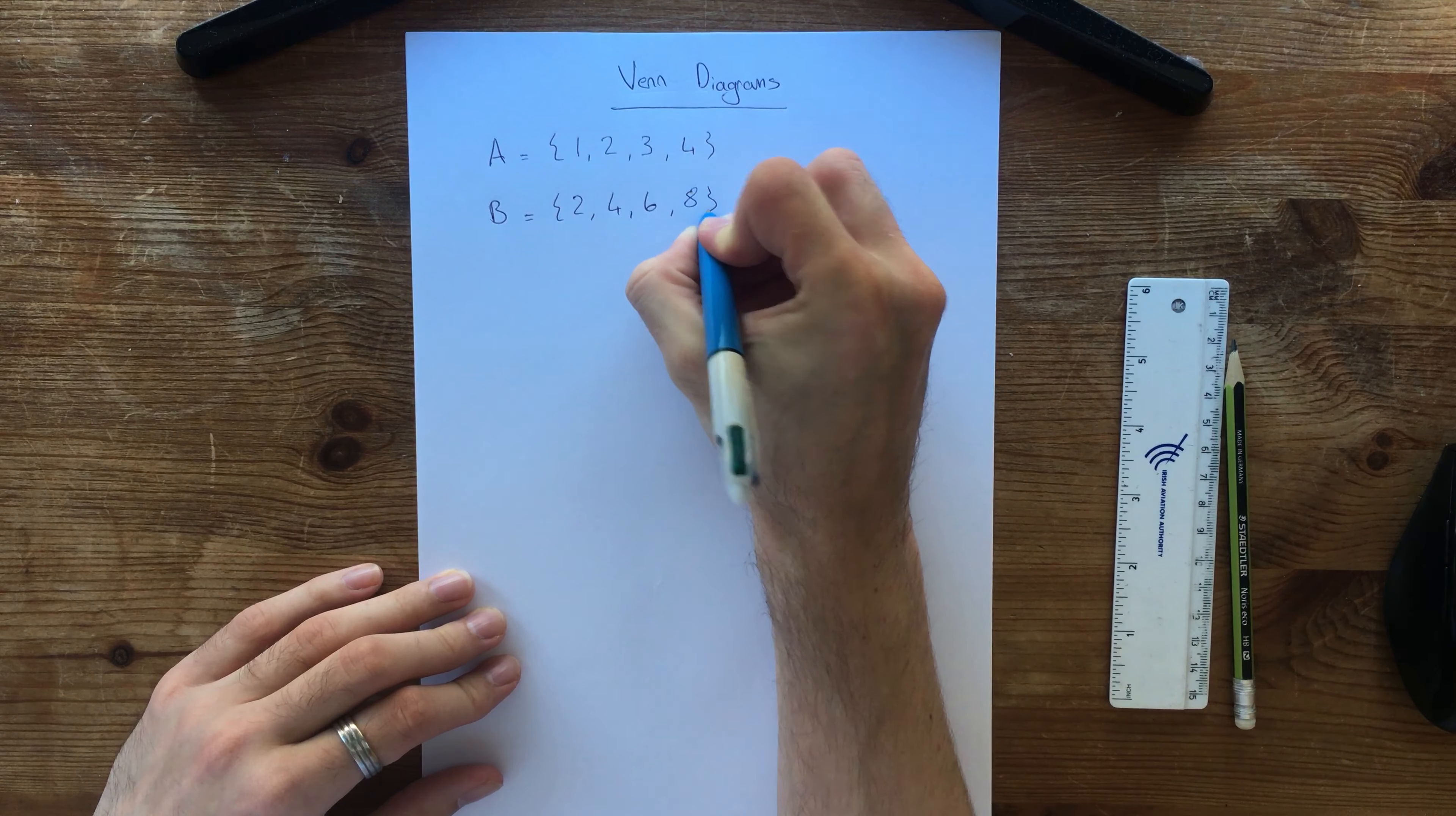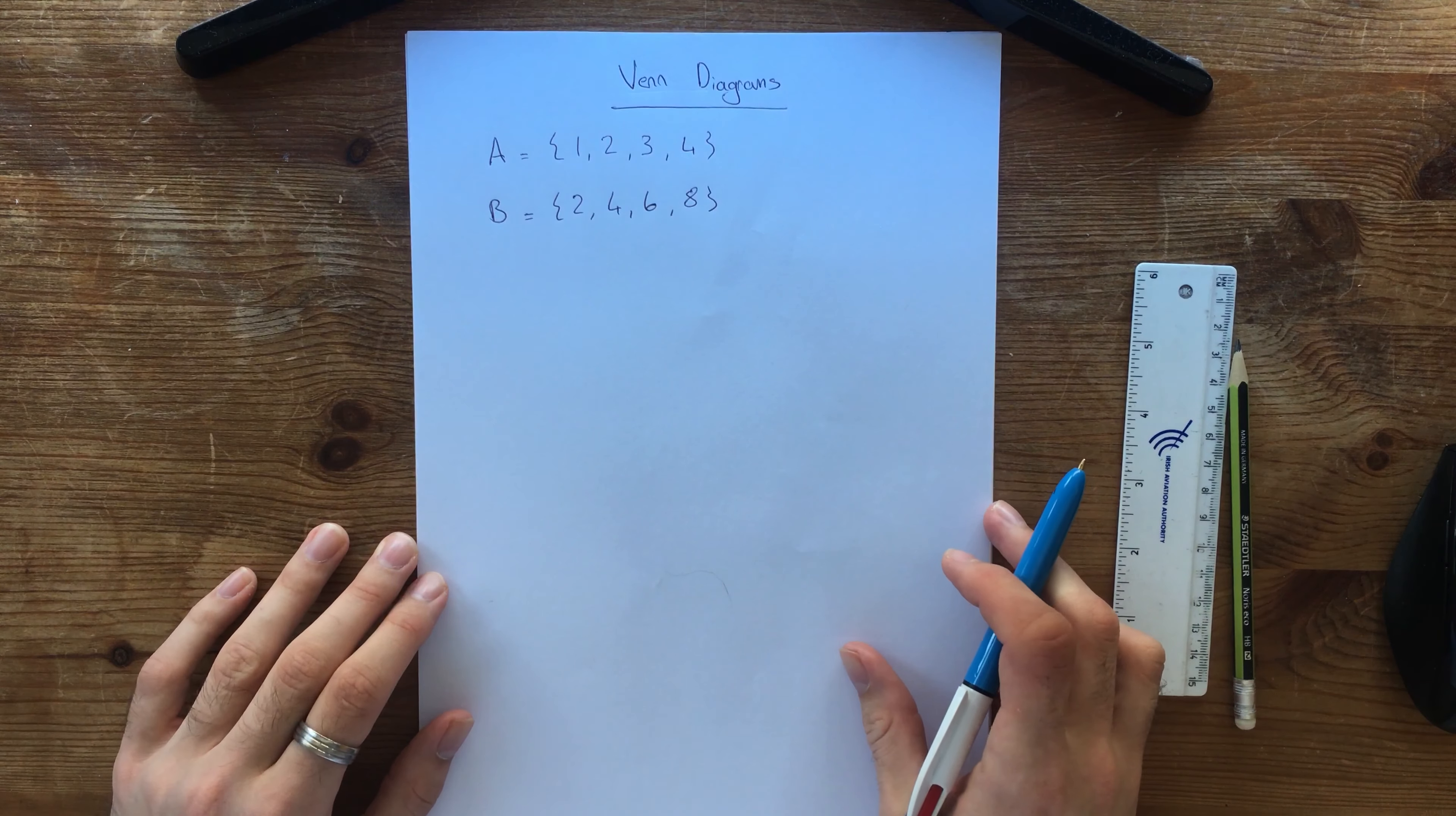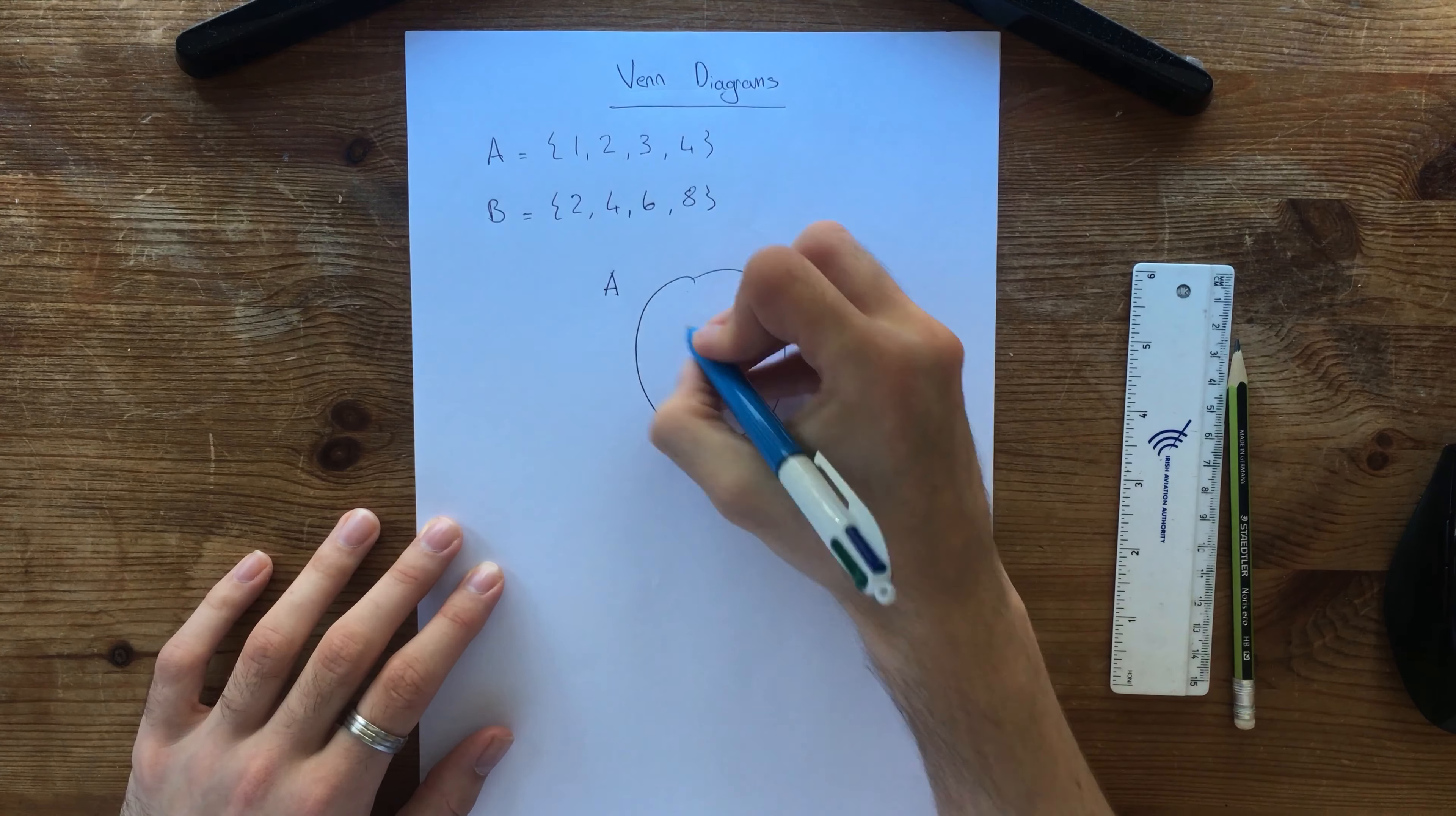Okay, so this is a nice way to look at sets but Venn diagrams makes everything look a lot neater and easier to look at. It means we represent the data just in a different kind of way. So if I want to show A, I'm just going to draw a circle.